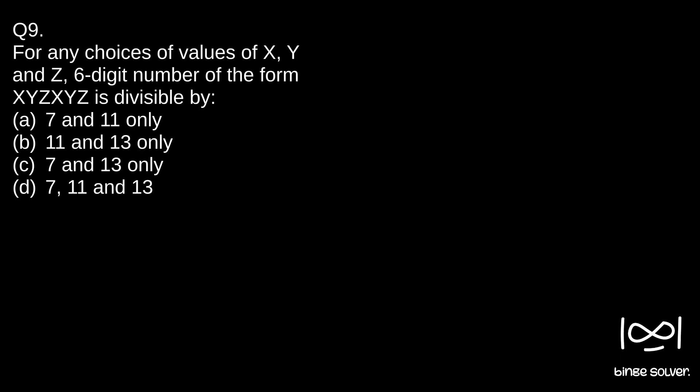So we have the number in the form XYZXYZ. To get a number of this form, we know it has to be like this: XYZ into thousand plus XYZ.